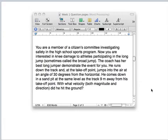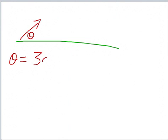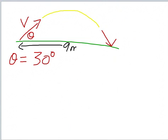Okay, we have a long jumper. Here's the ground. We know the long jumper takes off at an angle theta which is 30 degrees to the horizontal. We don't know the speed.